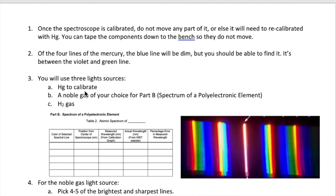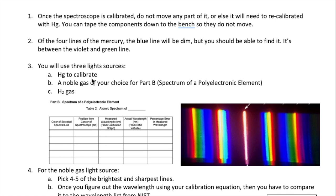There are three light sources you're going to use today. Mercury, a noble gas, and hydrogen gas. The mercury is what you will use to calibrate. The noble gas is an example of a polyelectronic element, which is part B of your lab. And the last part is the hydrogen gas.